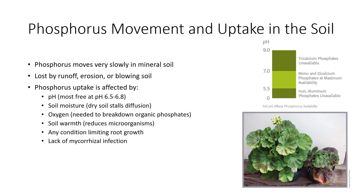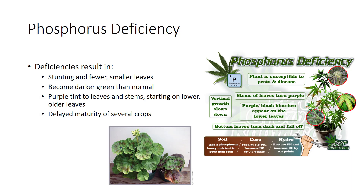Phosphorus is most free at a pH of 6.5 to 6.8. Dry soil stalls diffusion of phosphorus to roots; therefore, roots take up phosphate best in moist soils. Oxygen is needed for the breakdown of organic phosphates. Cold soil slows the activity of microorganisms that place phosphorus in solution, slows diffusion to roots, and retards root growth. Any condition that limits root growth limits ability to forage for phosphorus. Mycorrhizal infection of plant roots helps the plant absorb phosphorus, especially in low-phosphorus soils. A shortage of phosphorus can cause stunting and fewer, smaller leaves. Plants remain dark green, or may even become darker green than normal. Phosphorus-deficient plants often have a purple tint to leaves and stems, starting on lower, older leaves. The purpling develops from an increase in the pigments responsible for red plant colors — anthocyanins. Plants that do not synthesize the pigment will not show the color.